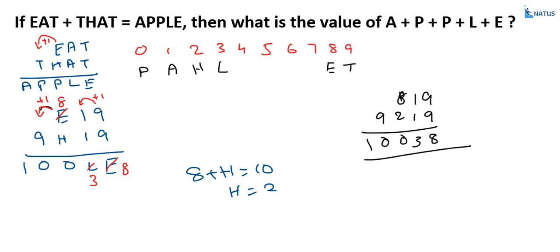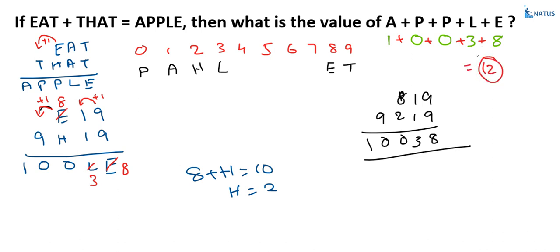Now, what we required: the value of A plus P plus P plus L plus E. A equals 1, P equals 0, P equals 0, L equals 3, E equals 8. So, this is equal to 1 plus 0 plus 0 plus 3 plus 8, which equals 12.